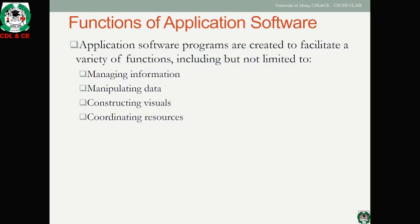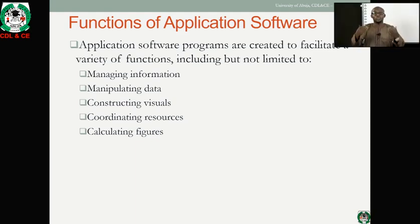Application software also allows for coordinating resources. For example, an enterprise resource management application can manage the raw materials, fuel, and staff required in a production line. Additionally, it supports calculating figures — for example, computing an organization's payroll by factoring in gross pay, allowances, and percentage allocations to determine the net pay that goes into an employee's bank account.